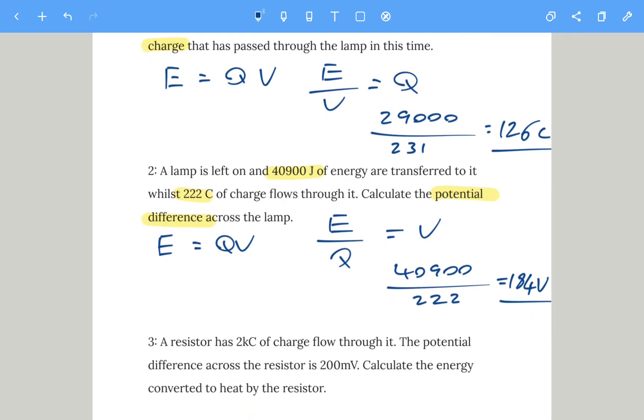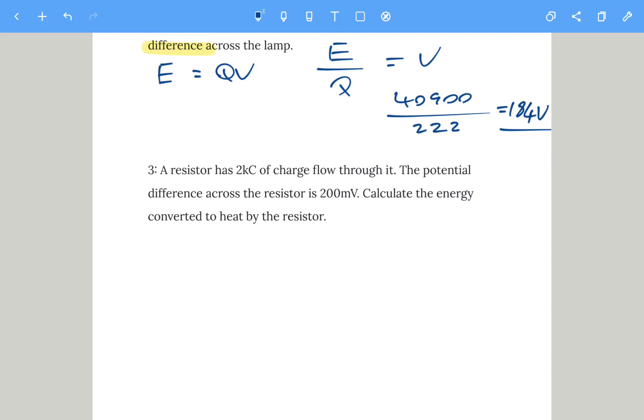Let's do question three. If you want to pause and have a go, I'll take you through the answer now. A resistor has 2 kilocoulombs of charge flow through it. The potential difference across the resistor is 200 millivolts. Calculate the energy.